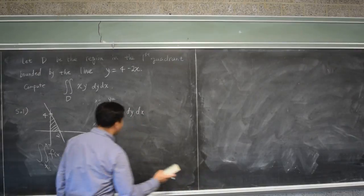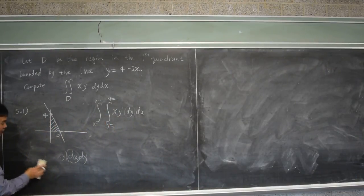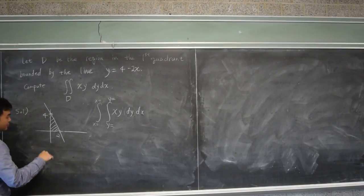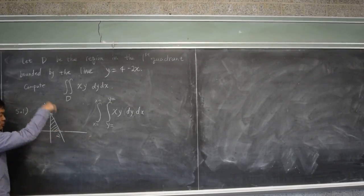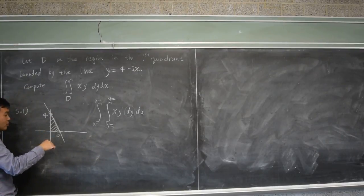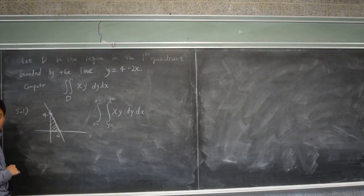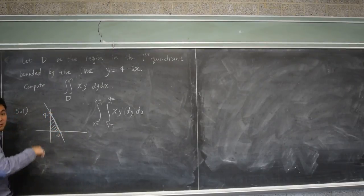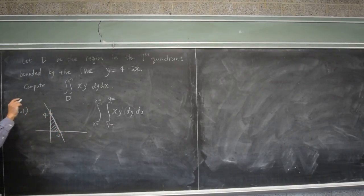And depending on which direction you're painting, it determines what goes in here. Because if you're painting rightwards, these are x equal to something and x equal to something, right? If you're painting upwards, these are y equal to something and y equal to something, right? That's the picture that I want you to have in your mind.